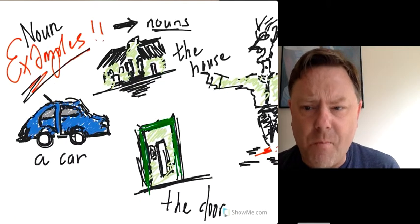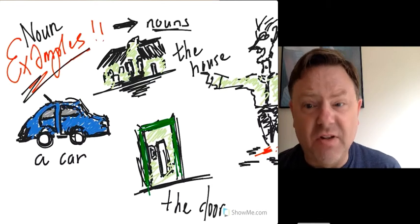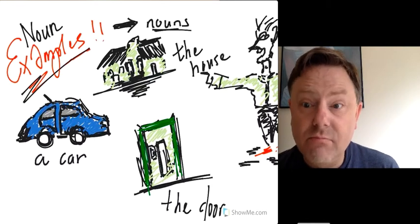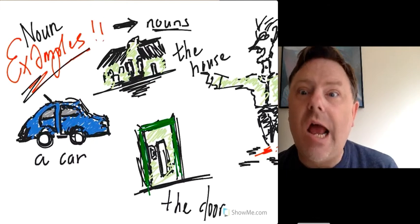So here's some examples. The house, a car, the door, the table. It's a noun. It's an object or thing.